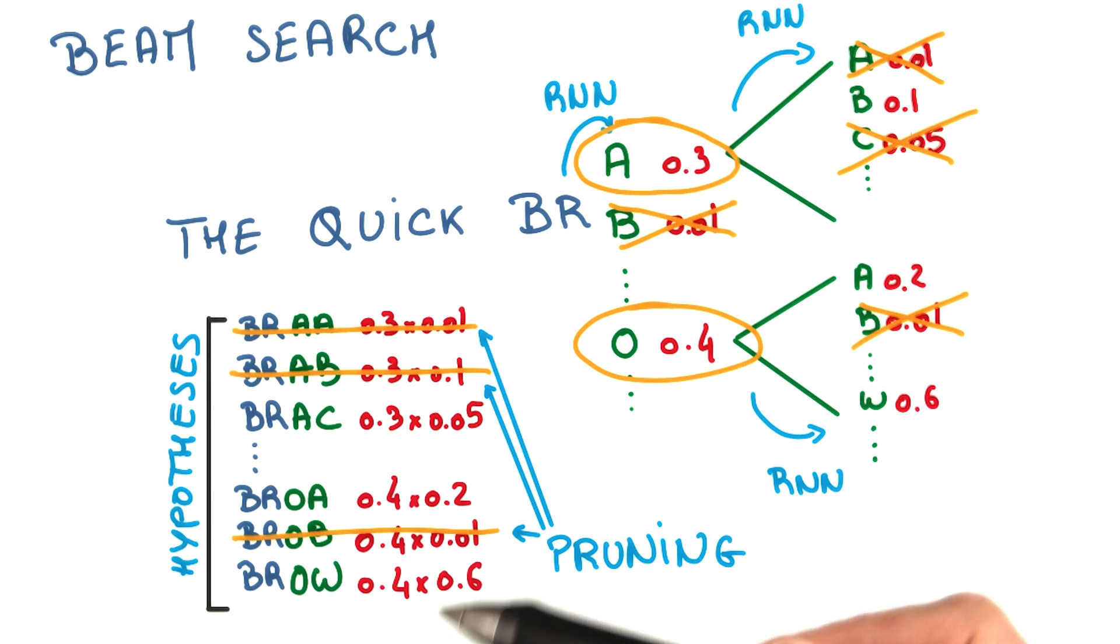You only keep, say, the most likely few candidate sequences at every time step, and then simply prune the rest. In practice, this works very well for generating very good sequences from your model.